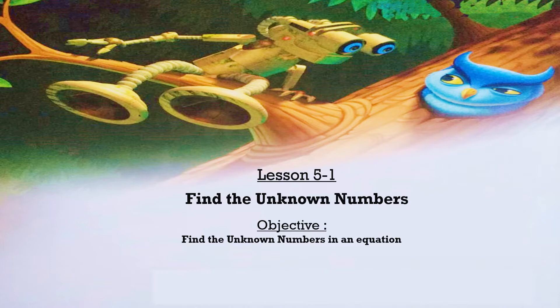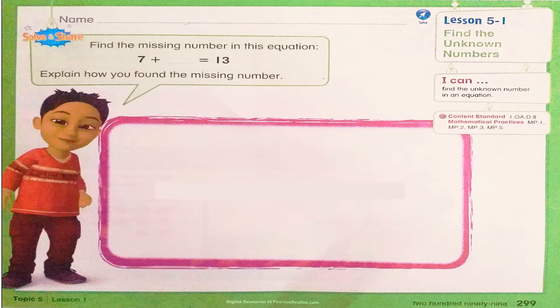Please open your books on page 299. Let's start by reading the problem. Find the missing number in this equation: 7 plus an unknown number equals 13. Explain how you found the missing number.